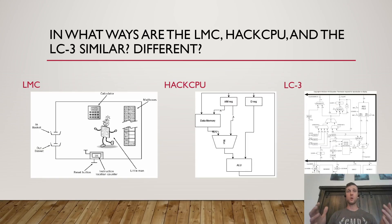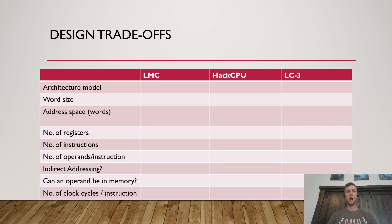So to start with you might ask yourself this question, looking at the LMC, the HACCPU, the LC3, in what ways are they similar? In what ways are they different? You can see the data paths here in front of you and you might already be seeing or thinking of several ways in which they share qualities or that they differ in qualities. Sort of my first pass at the things that made them similar or different are here on the left.